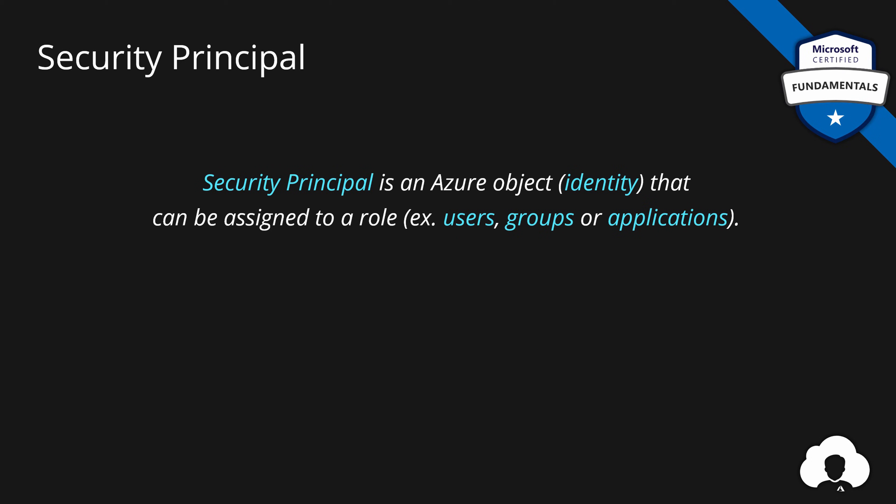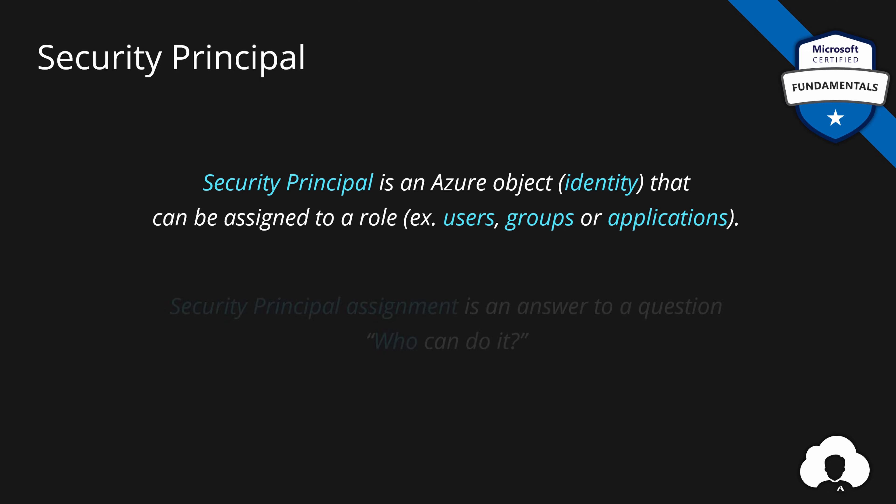A security principle is an Azure object — an identity — that can be assigned a role. Those objects can be users, groups, or applications. Security principle assignment answers the question: who can do it? So a role answers what can be done, and the security principle assignment defines who can do it.